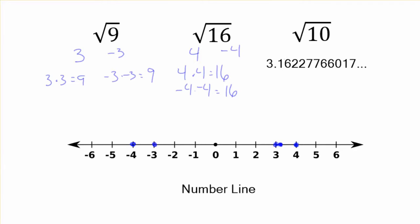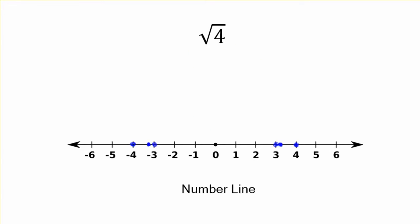But remember, negative times a negative is a positive. It's also negative 3.162277, and on and on. And that's also on the number line somewhere. These are all real numbers. These are real square roots.